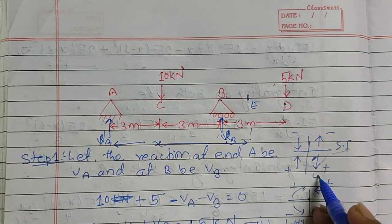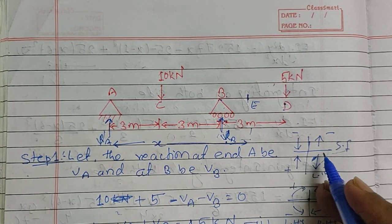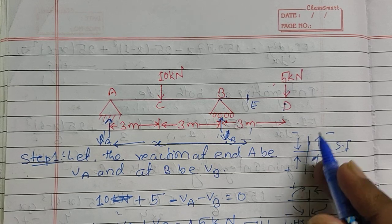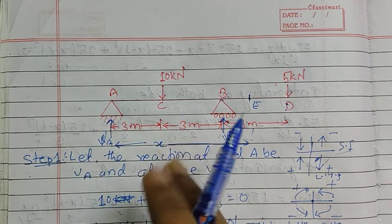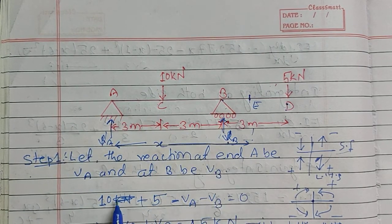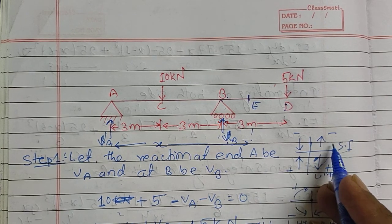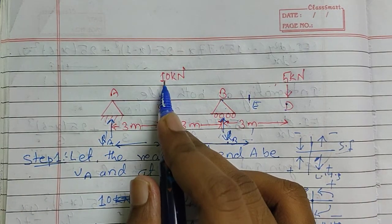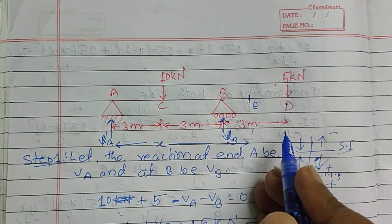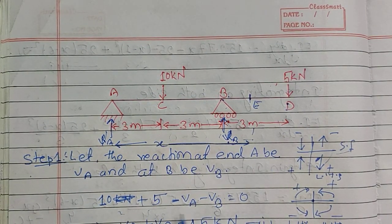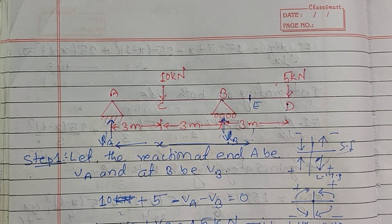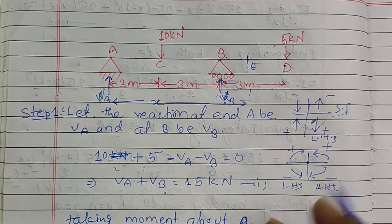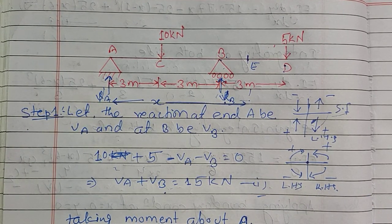The sign convention for the left-hand side states that downward force is positive and upward force is negative. VA and VB act in the upward direction, so both are taken as negative. The loads of 10 kN and 5 kN act downward, so they are positive. Solving this gives the equation: VA + VB = 15 kN.